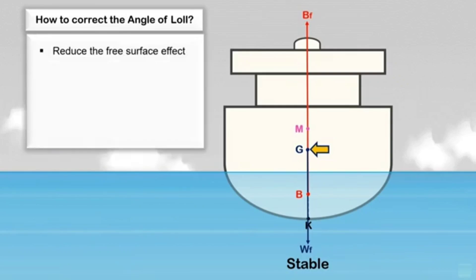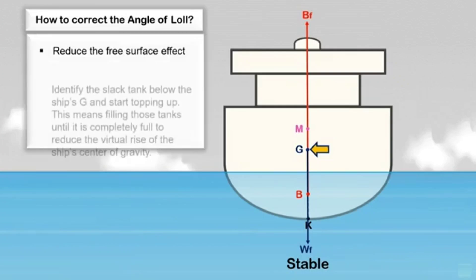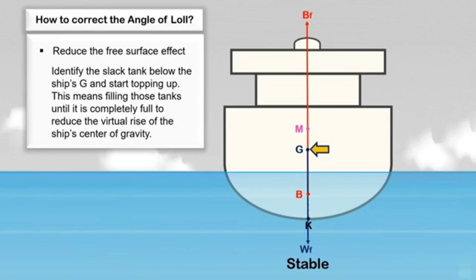Another way to correct the angle of loll is to reduce the effect of free surfaces due to slack tanks. Identify the slack tank below the ship's G and start topping up — this means filling those tanks until completely full — to reduce the virtual rise of the ship's center of gravity. That's all for now; I hope you found this video helpful. Thank you for watching.